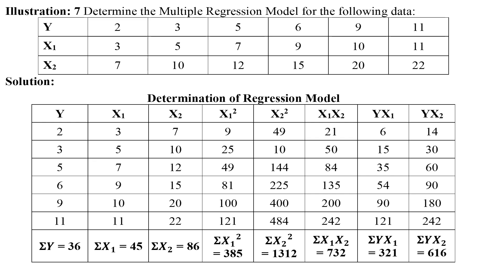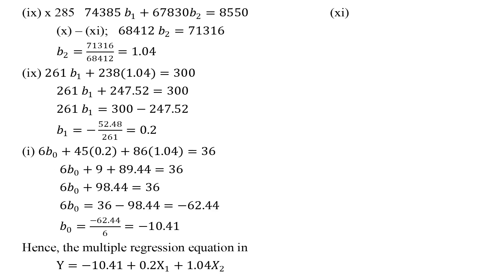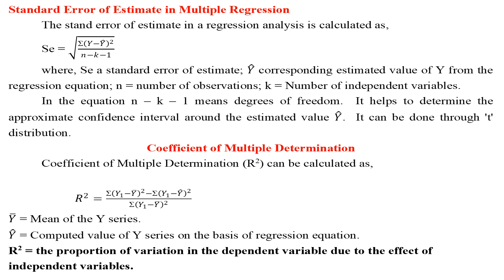Illustration 7: Determine the multiple regression model for the given data. An eight-column table is prepared with columns for y, x1, x2, their squares, x1×x2, y×x1, and y×x2, followed by their sums. The values of b0, b1, and b2 are ascertained through normal equations, and the multiple regression equation is determined. Standard error of estimate in multiple regression is calculated as: Se = √[Σ(y - ŷ)² / (n - k - 1)], where ŷ is the estimated value of y, n is the number of observations, and k is the number of independent variables.